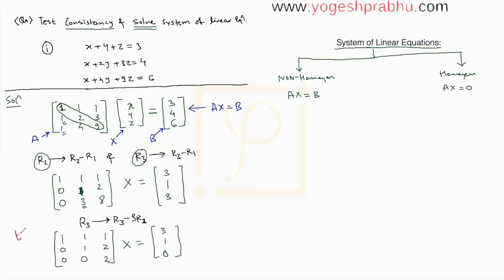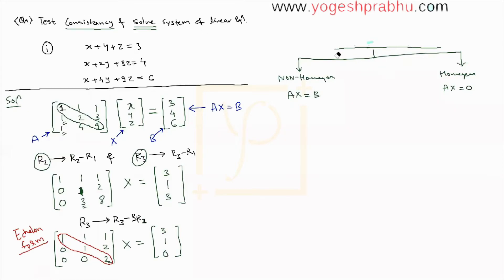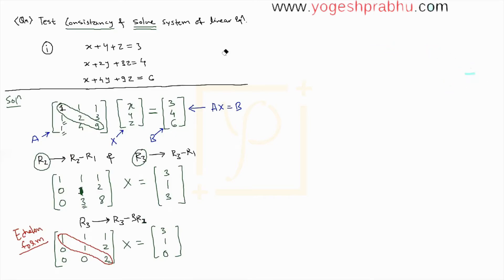This form is now called the echelon form, also known as the row reduced echelon form, because we performed row operations to achieve it. Notice that below the diagonal all values are zero — the matrix A has become an upper triangular matrix. Once we have it in this form, we rewrite all the equations.